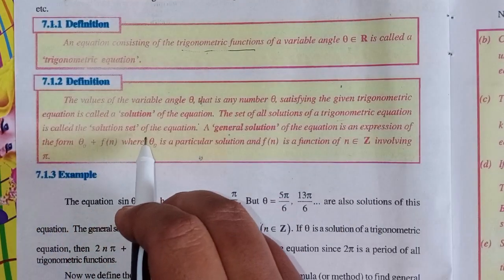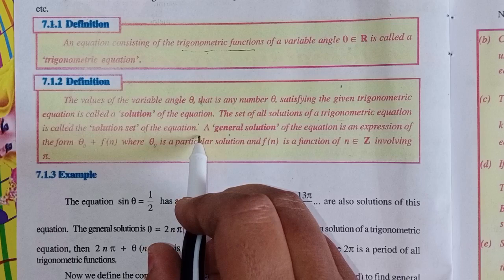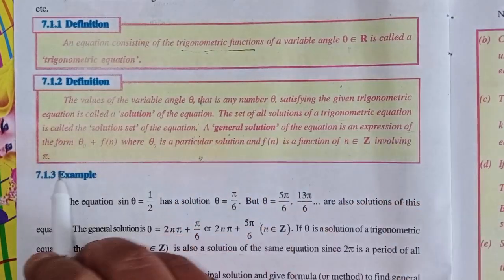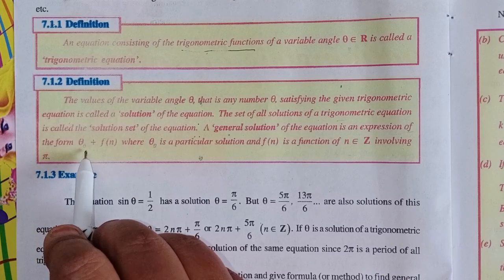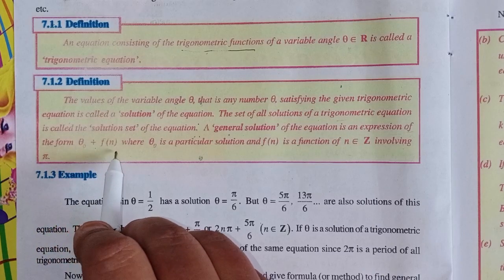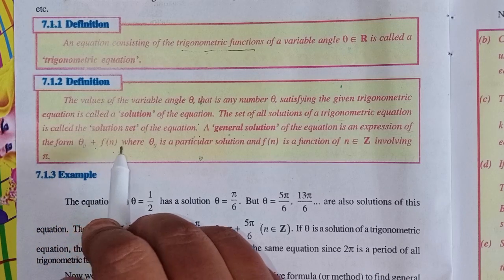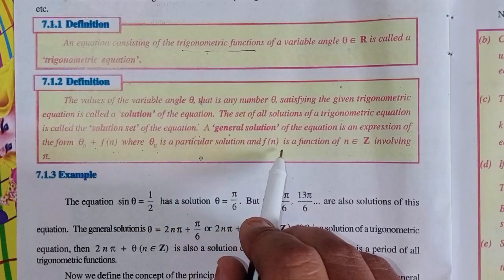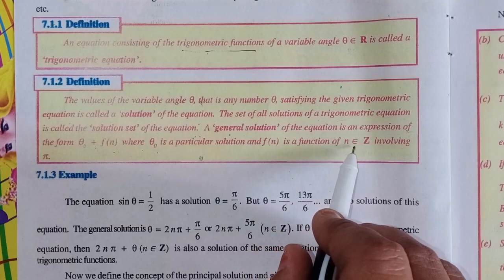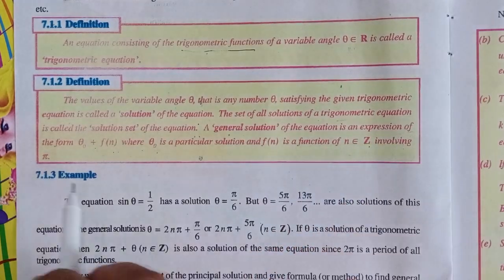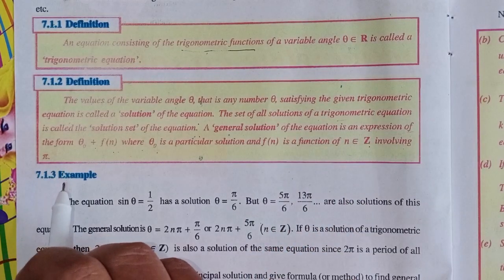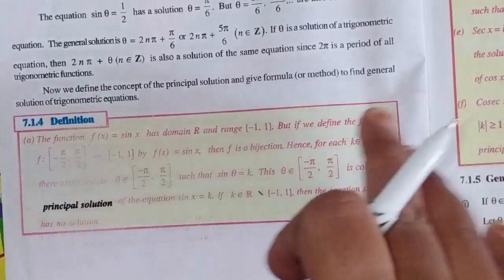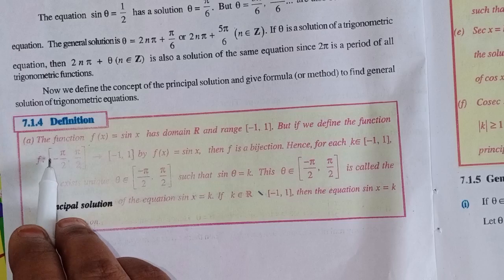The general solution of the equation is an expression of the form θ₀ + f(n), where θ₀ is a particular solution and f(n) is a function of n, where n belongs to ℤ, involving π.